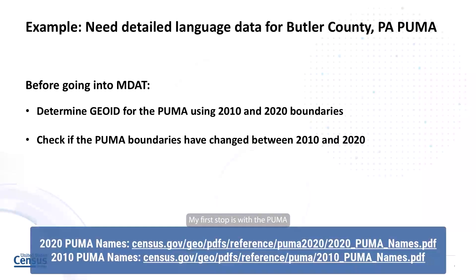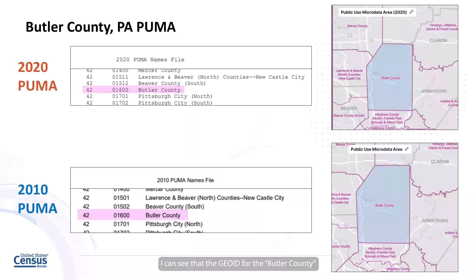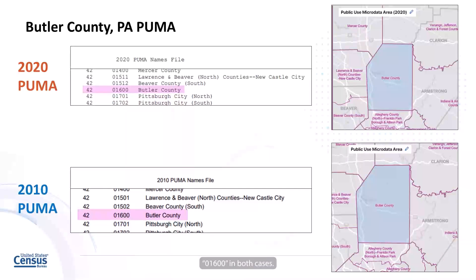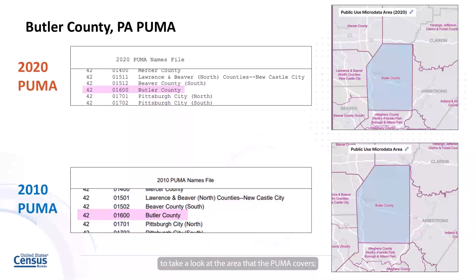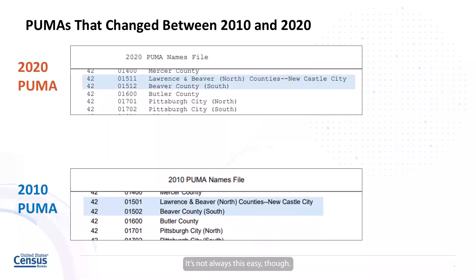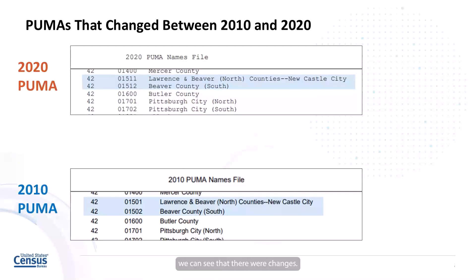I can see that the GOID for the Butler County PUMA did not change between the 2010 and 2020 censuses — it's 01600 in both cases. Then I checked in data.census.gov to take a look at the area that the PUMA covers. It doesn't look like there was any change with the area covered either. It's not always this easy though. In just the PUMAs found in the list above the one for Butler County, we can see that there were changes.